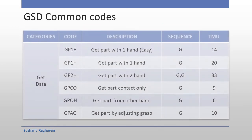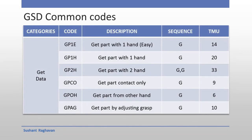GHD Common Codes — Get Data category: GP1E — Get part with one hand (easy contact); GP1H — Get part with one hand; GP2H — Get part with two hands; GP2H (contact only) — Get part contact only; GPOH — Get part from other hand; GPAG/GPG — Get part by adjusting grasp.